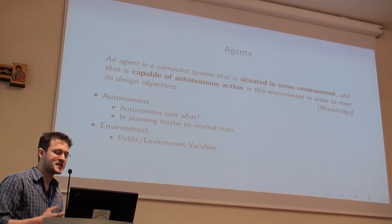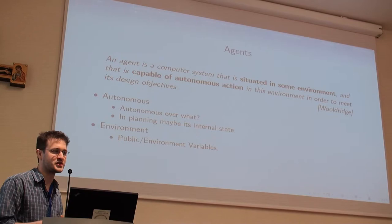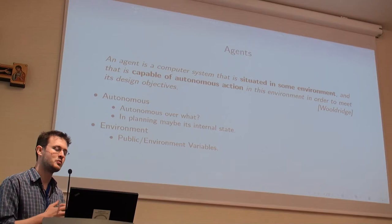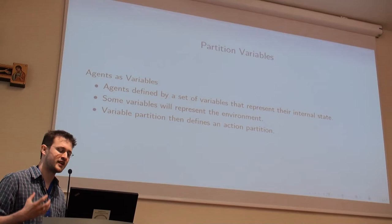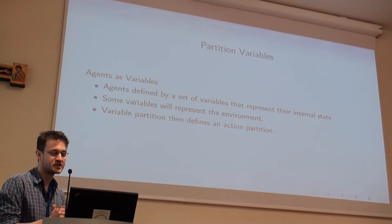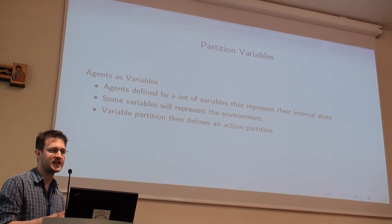What does autonomous mean in a planning case where we don't really care much about the agents themselves — we're just using them as a tool to solve things faster? Well, autonomous here means there must be some part of the problem that the agent has control over, which we call that agent's internal state. So now instead of agents being a partitioning of actions, we move back a little: we use a variable representation of the domain, and now agents are defined by a set of variables that represent their internal state.